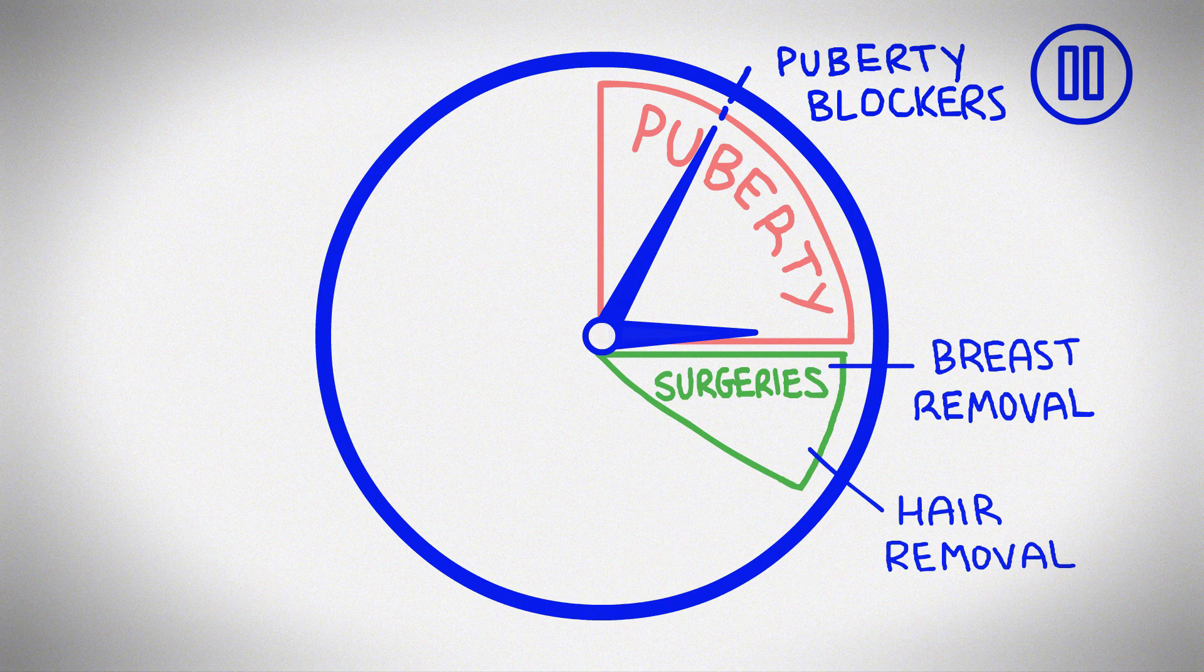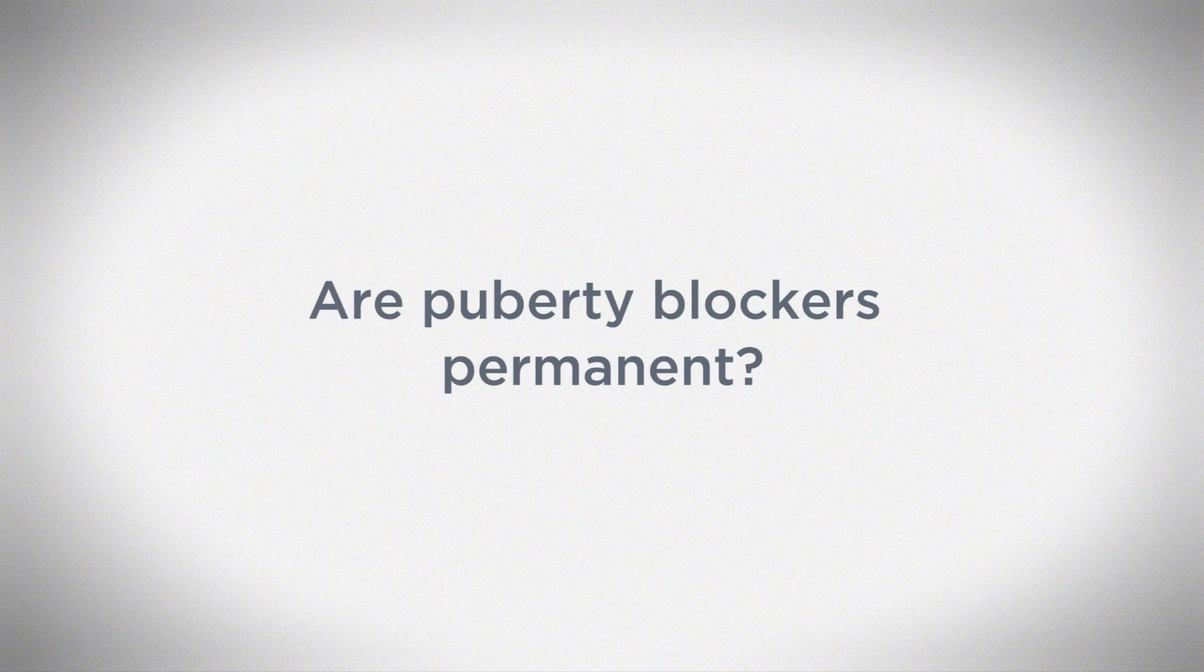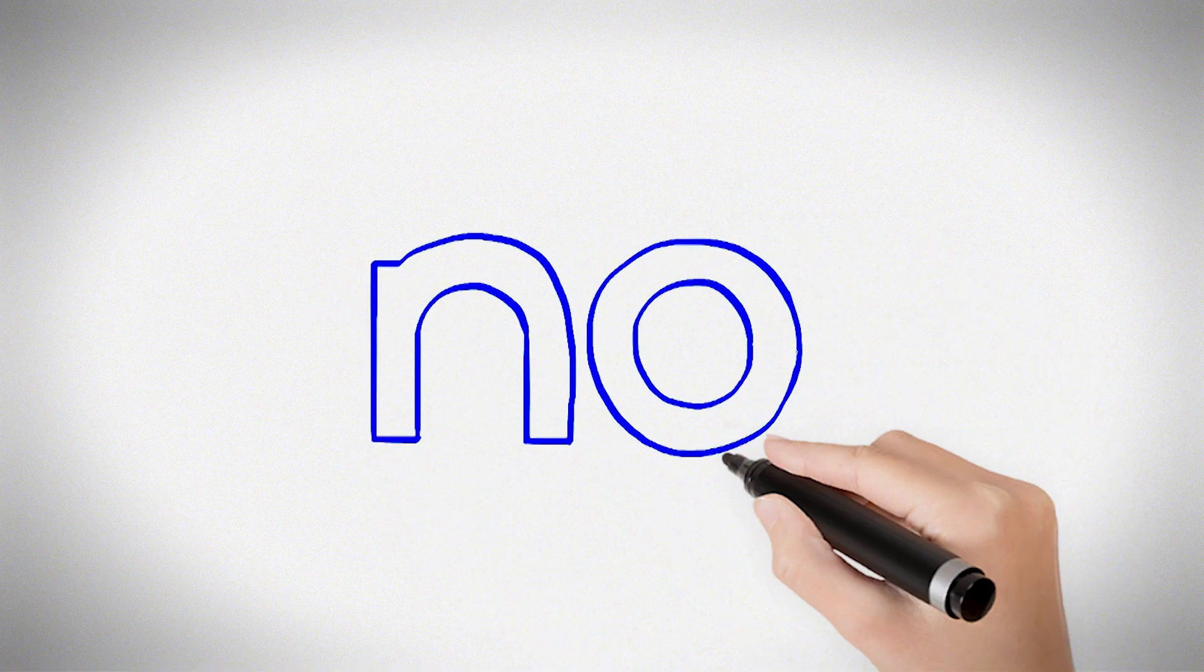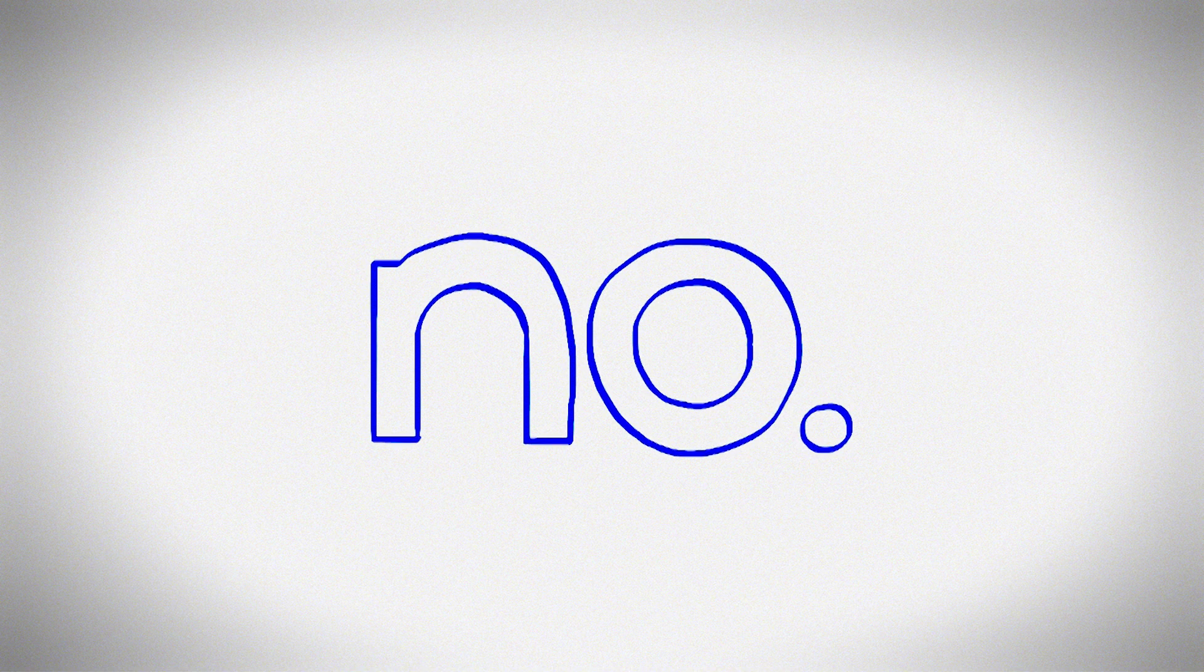Because puberty gradually changes the body, for some people, puberty blockers may block future body changes even if you are in the middle of puberty. If you stop taking puberty blockers, your body will continue going through puberty.